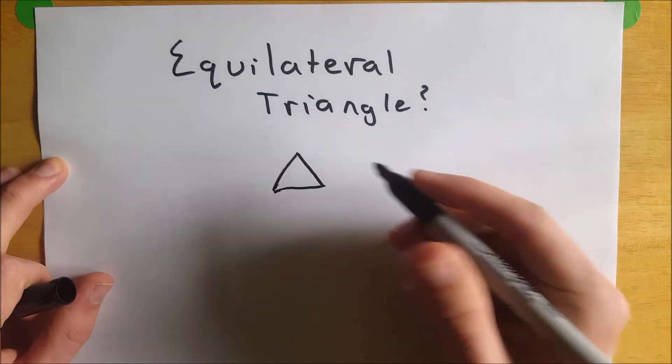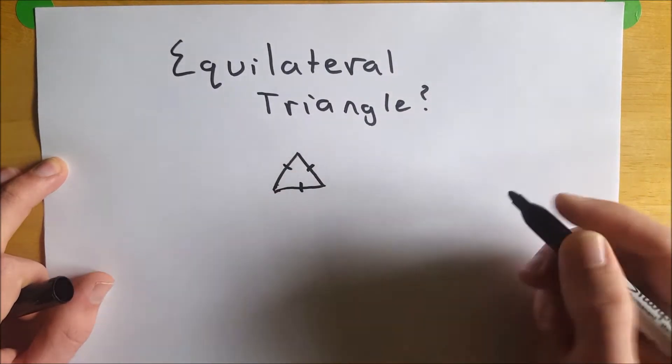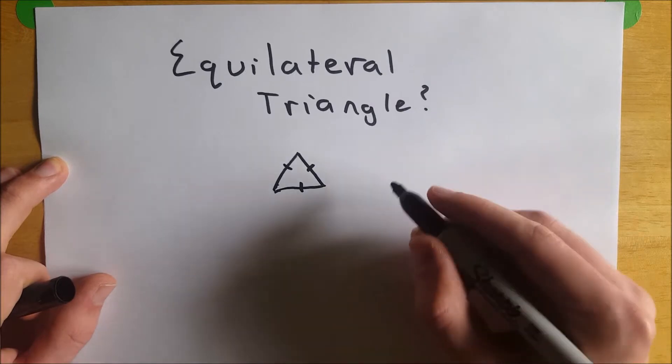This will often be denoted with little hash marks. One hash mark on each side shows that all the sides are congruent.